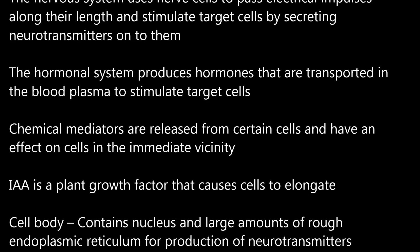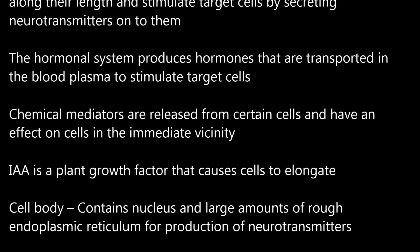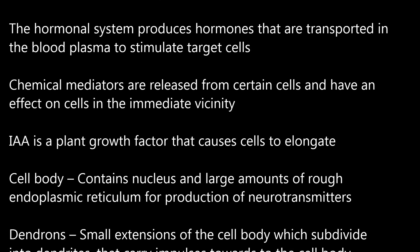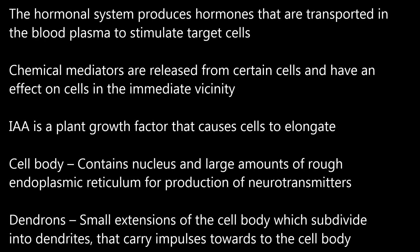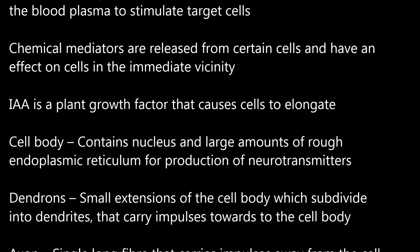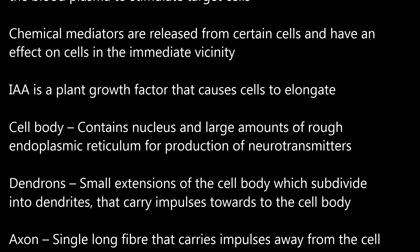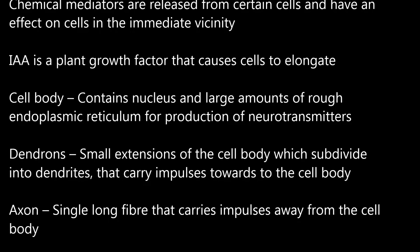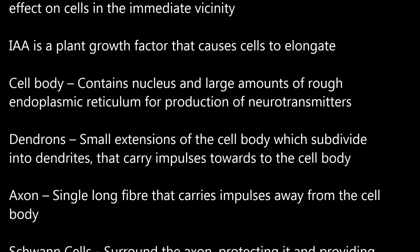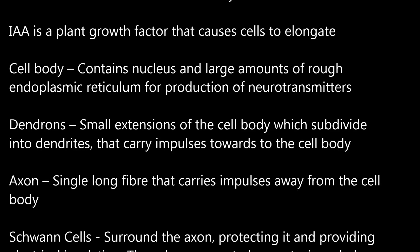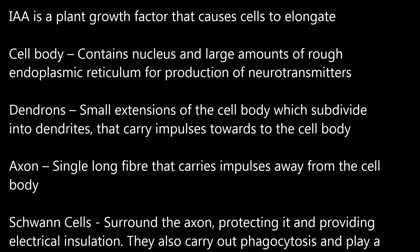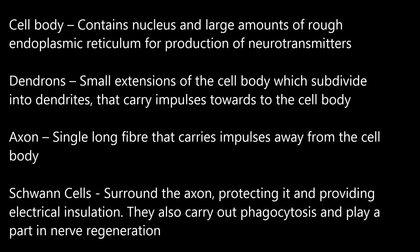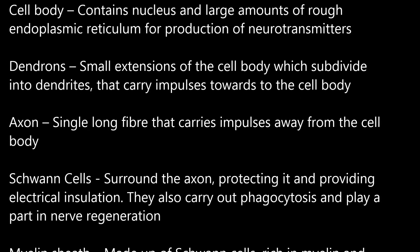Cell body: contains the nucleus and large amounts of rough endoplasmic reticulum for production of neurotransmitters. Dendrons: small extensions of the cell body which subdivide into dendrites that carry impulses towards the cell body. Axon: a single long fibre that carries impulses away from the cell body. Schwann cells surround the axon, protecting it and providing electrical insulation. They also carry out phagocytosis and play a part in nerve regeneration.